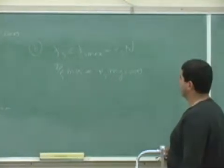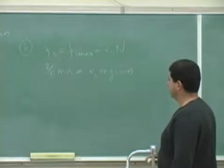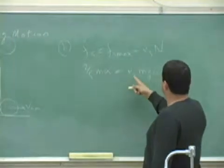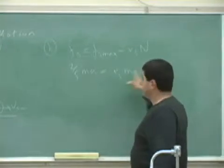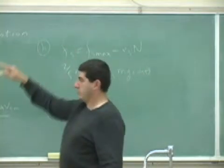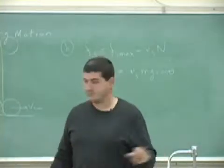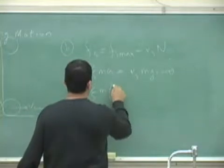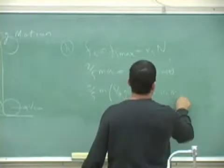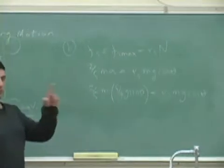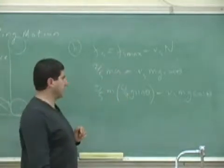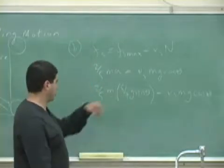You have Fs equal to two-fifths M A, and that equals mu s times N, and N equals M G cos theta. Then I've got to put in what A is. The acceleration of this object — what was our result? Five-sevenths G sine theta. So it's an intricately woven thing: Fs equals two-fifths M times five-sevenths G sine theta, and mu s times M G cos theta is the normal force term.